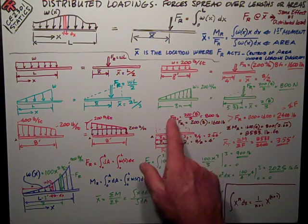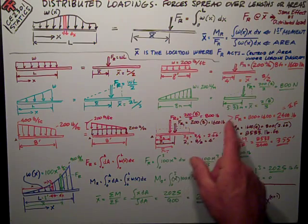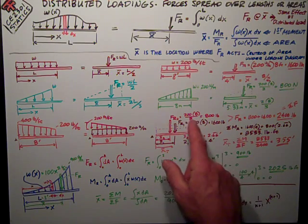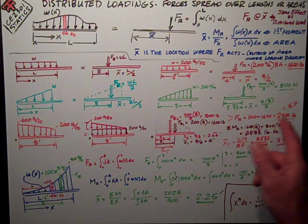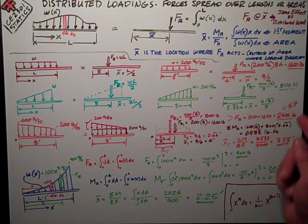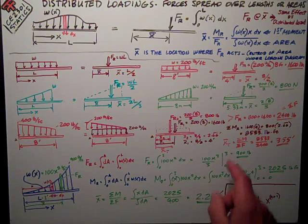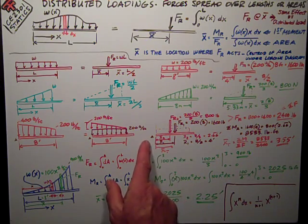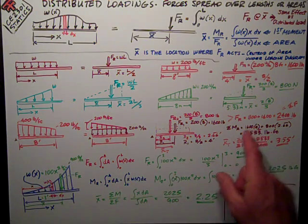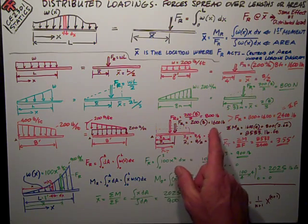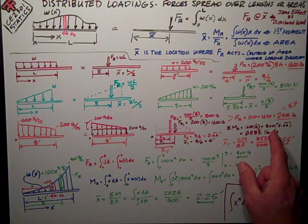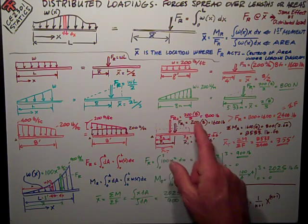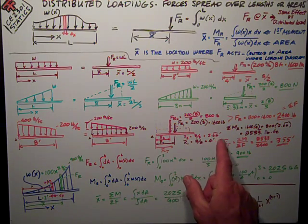Now to get my total resultant, I just add up the sum of the forces, the resultant forces of each component, and I have 800 plus 1600, 2400 pounds, the sum of the forces. Sum of the moments about this point A at this left end is FR1, 1600 pounds times 4 feet, plus 800 pounds, FR2, times 2.66 feet.